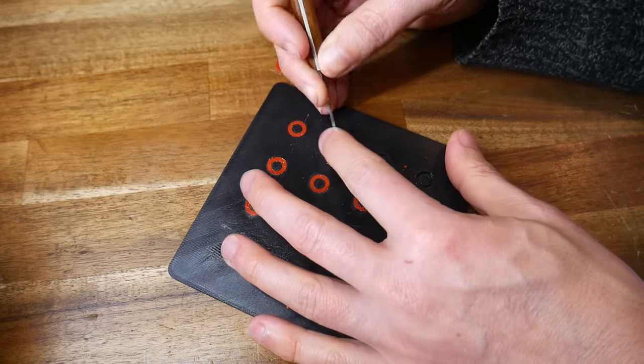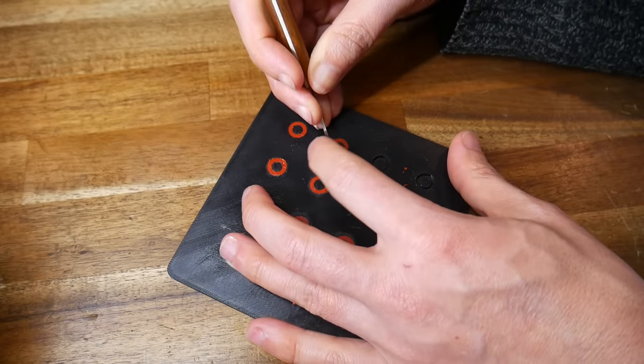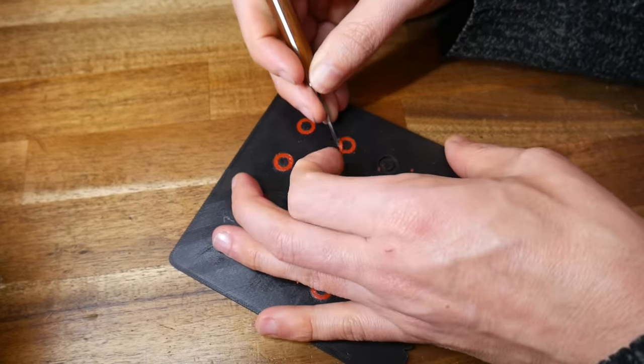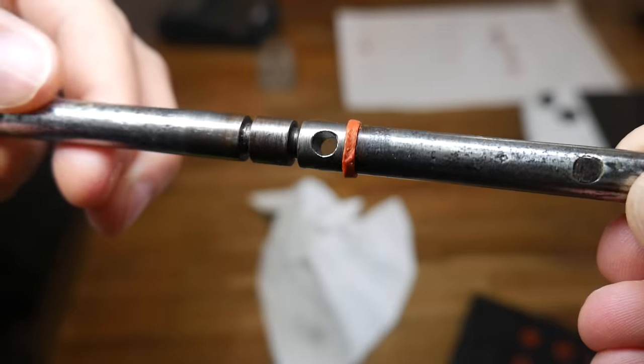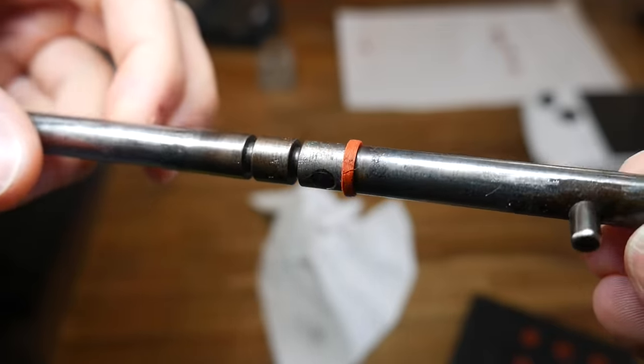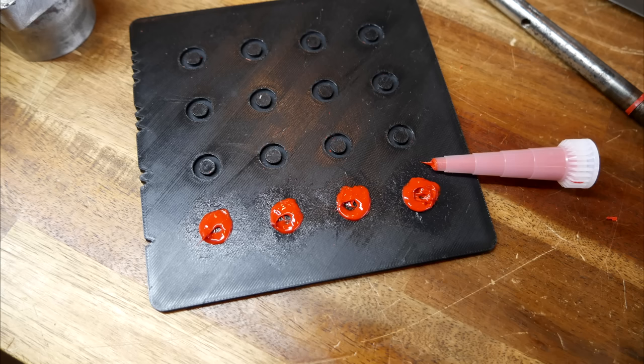However, when I then tried to pry them out, it turns out the mold release was not quite as good as the Vaseline I was using earlier. And worse still, even with all these new size variations, the thickness was just a little bit too big, so that meant yet another batch, this time a bit thinner.